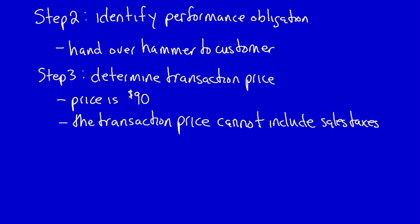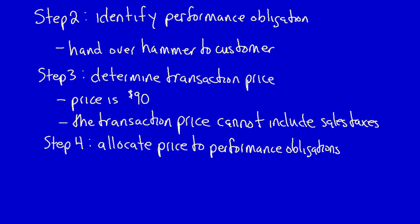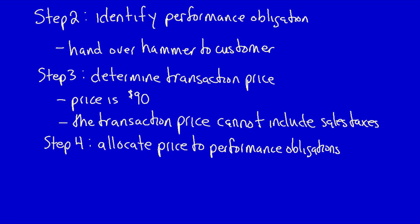Step four: allocate the transaction price to the different performance obligations. This step is not applicable here because we know from step two that there is only one performance obligation.